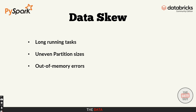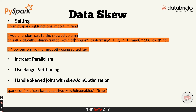One of the most effective ways to deal with skew is by using salting. Salting means artificially adding a random value to your key column, effectively splitting the skewed data across multiple partitions. For example, if you're joining or grouping by a highly skewed column like region, you can add a random number salt to the region column, creating additional partitions for the hot keys. As shown on screen, you add a new salted key column, then perform the join or group by using that salted key. By splitting the skewed key into multiple salted partitions, you distribute the workload more evenly across your cluster.